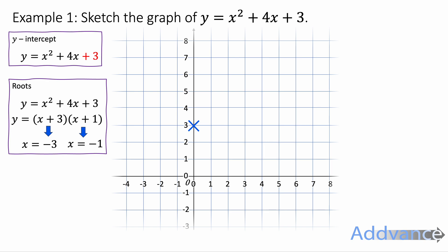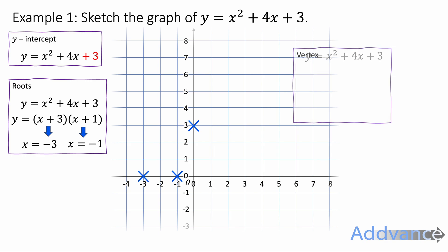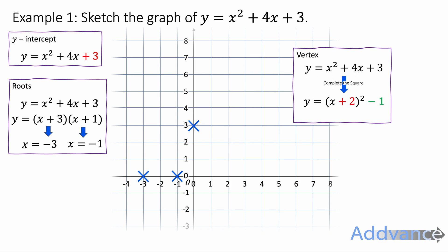You can also solve that using the quadratic formula. So x equals minus 3 and x equals minus 1 is where it crosses the x-axis. Now for the vertex, we're going to complete the square. That gives us (x + 2)² minus 1. Therefore the vertex is (minus 2, minus 1). Just remember, it's the opposite of the number in the bracket — inside says plus 2, so the x-coordinate is minus 2. The y-coordinate stays the same, it's the number on the end.